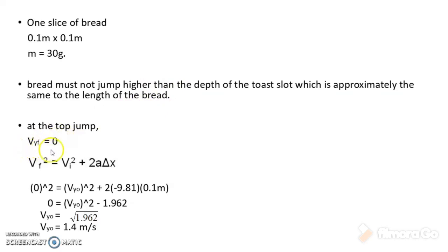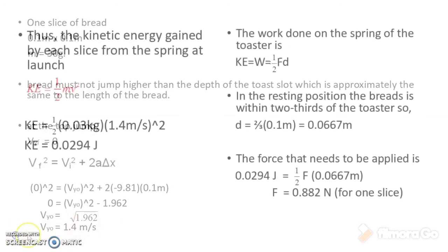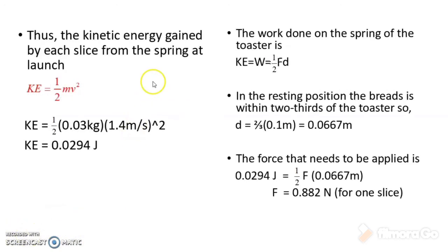At the top of the jump, the final vertical velocity is equal to 0. Using this equation, we can calculate the initial vertical velocity, which is 1.4 m/s. Next, we calculate the kinetic energy gained by each slice of bread from the spring at launch using KE = ½mv², and we get kinetic energy equal to 0.0294 joules.